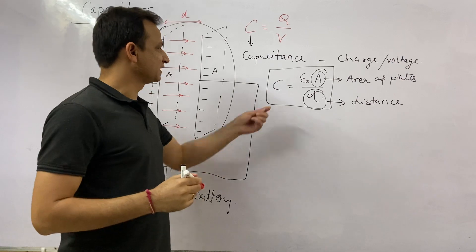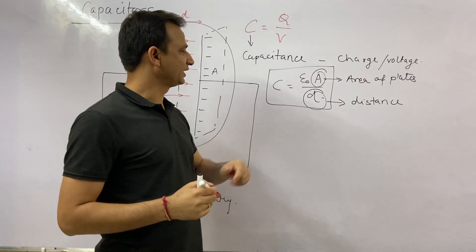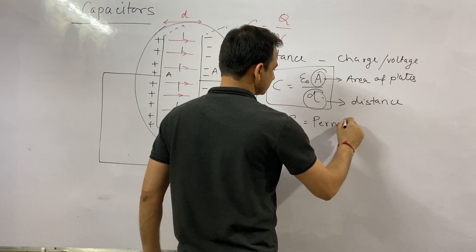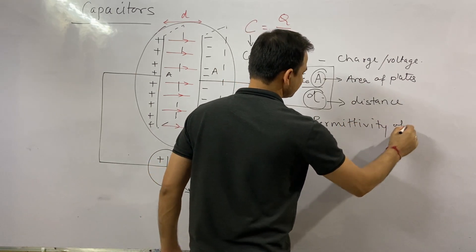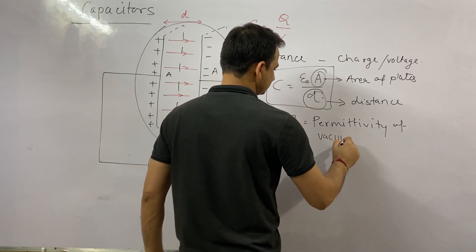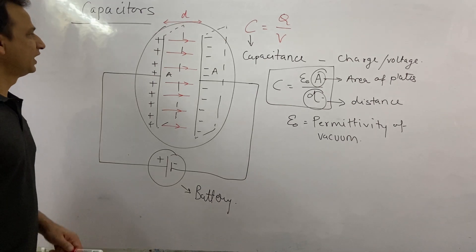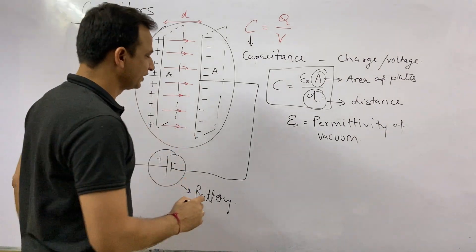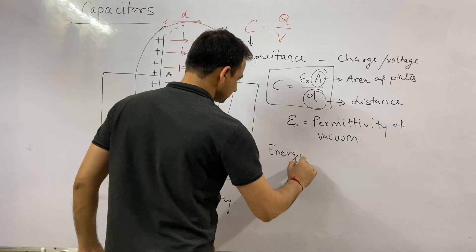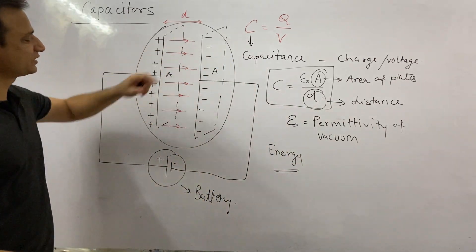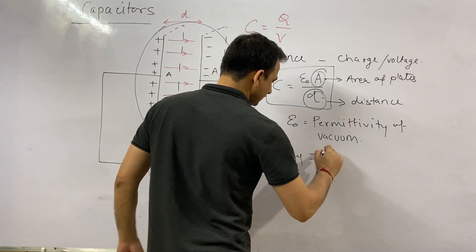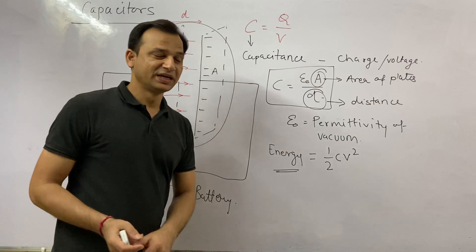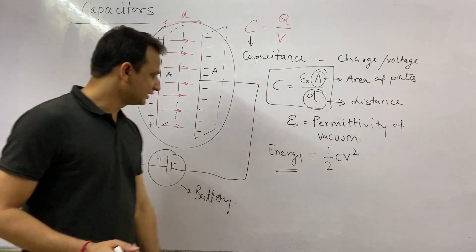The capacitance is given by C is equal to epsilon naught A by d, where epsilon naught is the permittivity of free space. Now, when these two plates are storing charges, it means they are storing energy as well. So the energy stored on the plates of a capacitor is given by a formula.